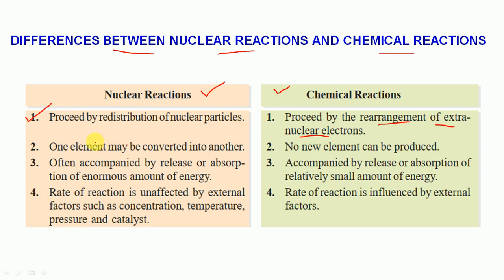The second point: in nuclear reactions, one element may be converted into another. In chemical reactions, no new element can be produced.